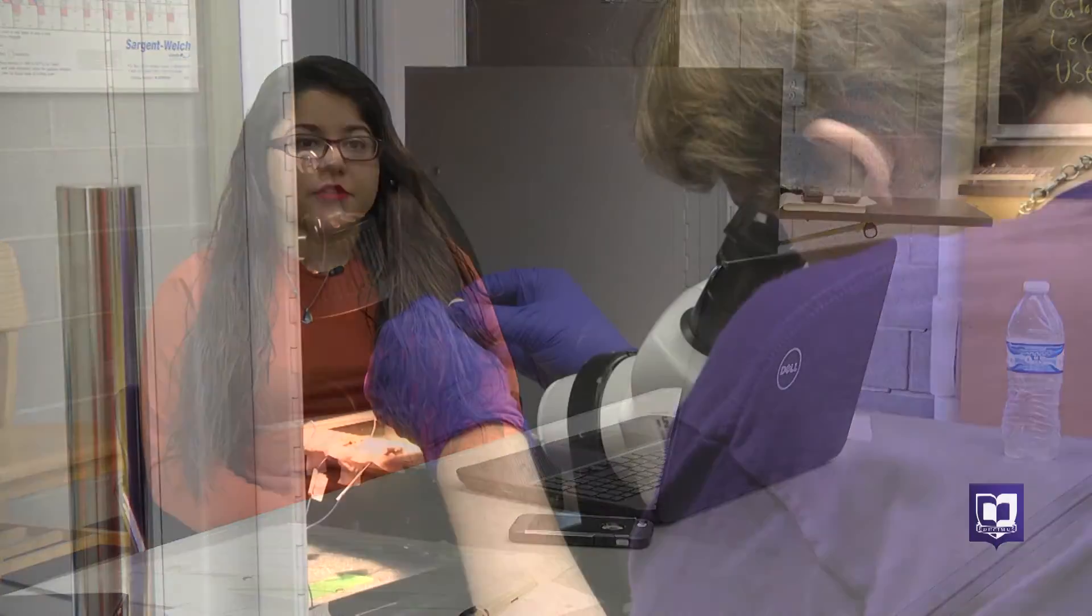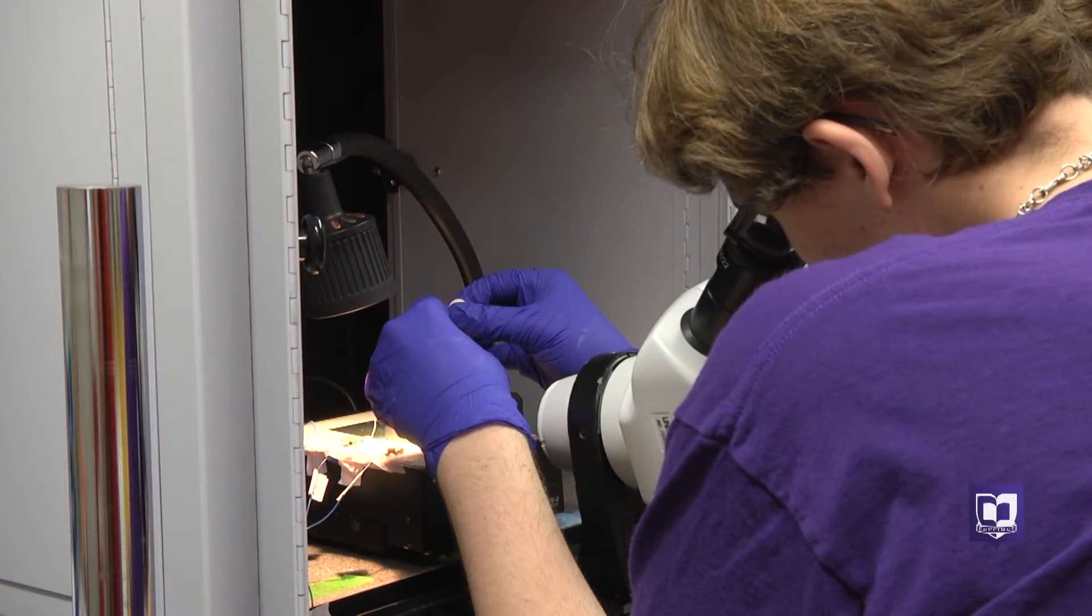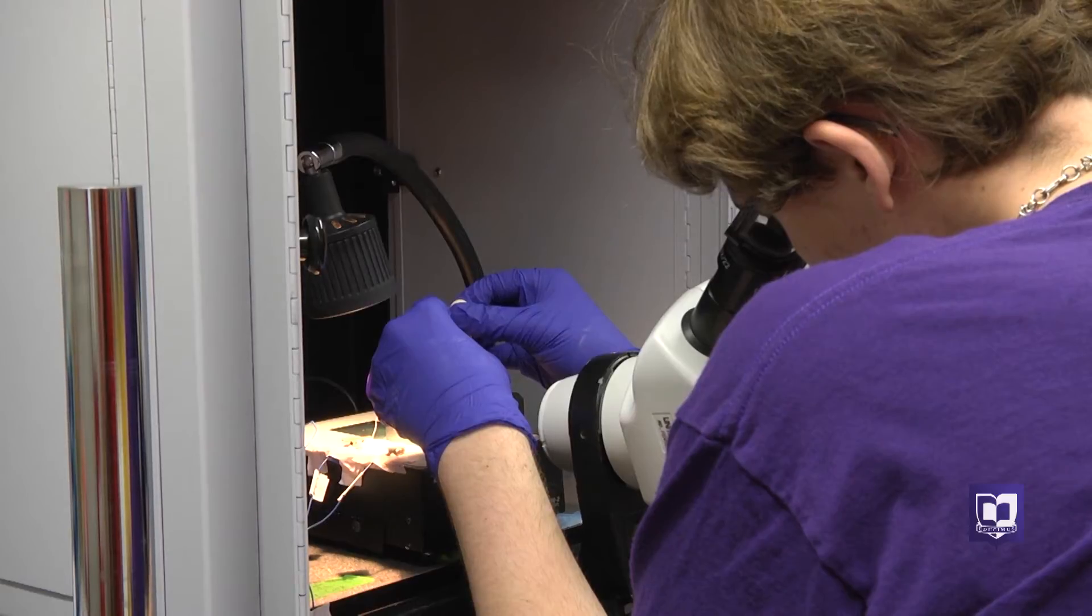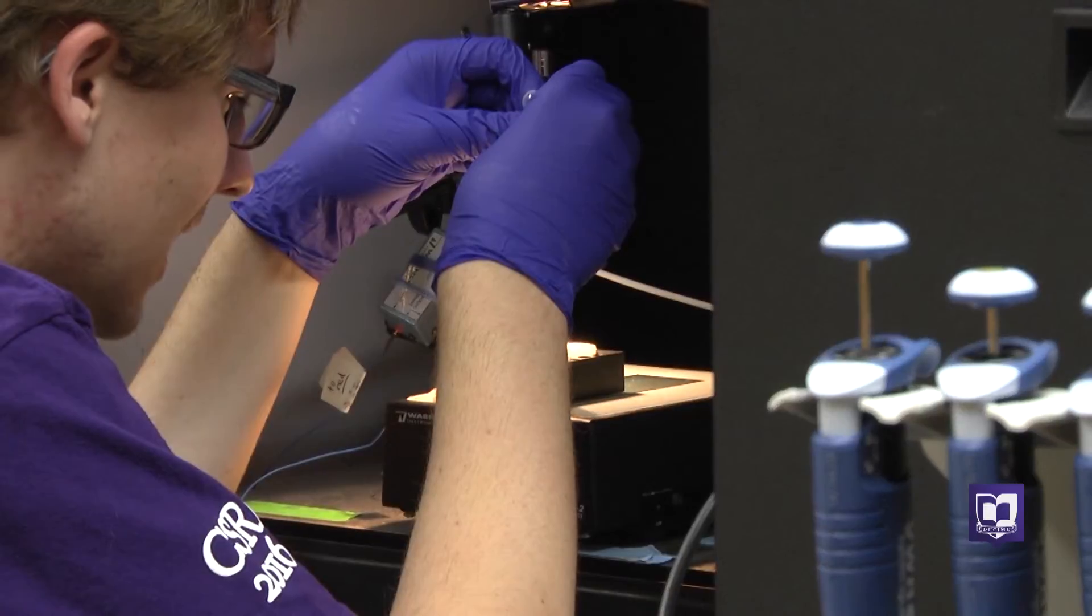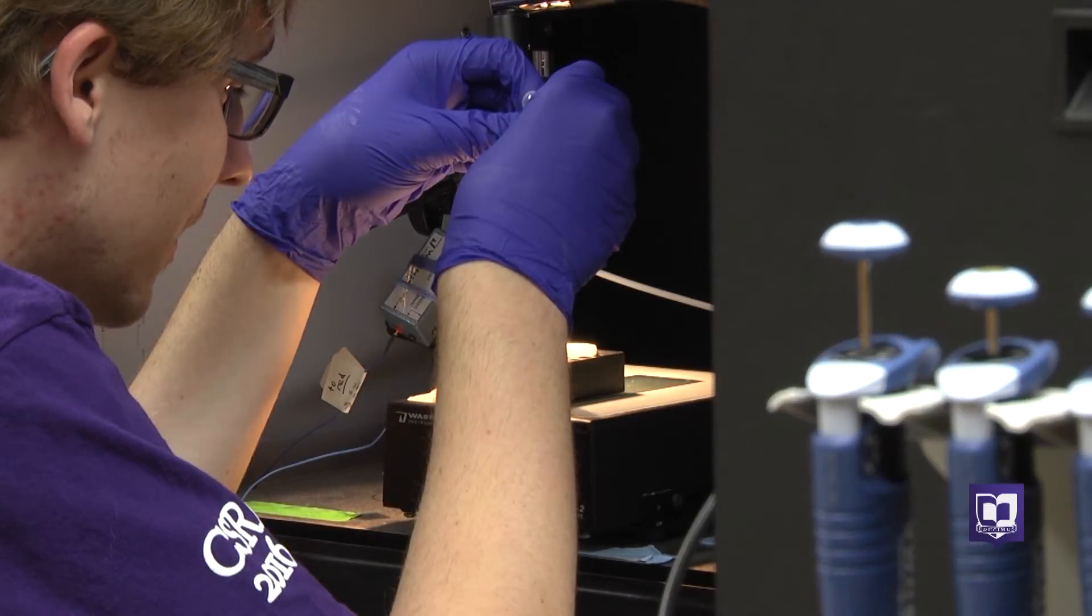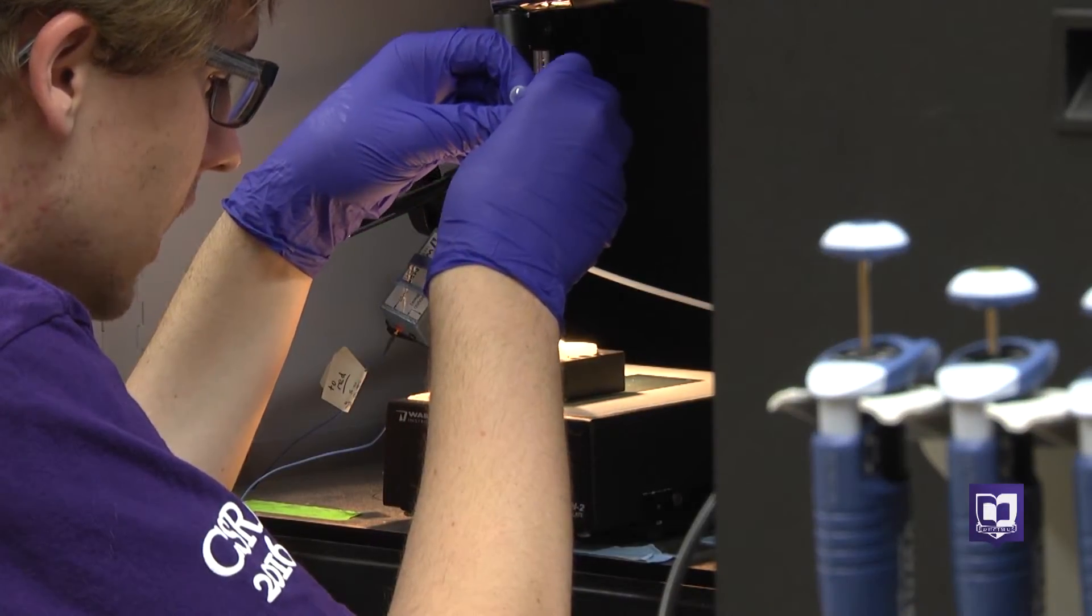Litt is examining resveratrol, a compound found in red wine. Studies have shown resveratrol has a number of health properties. His research looks at how it impacts proteins, which he describes as channels that bridge the outside and inside of the cell.